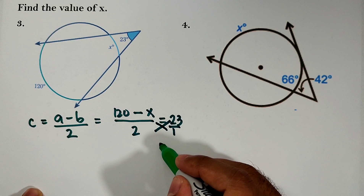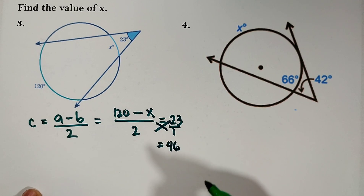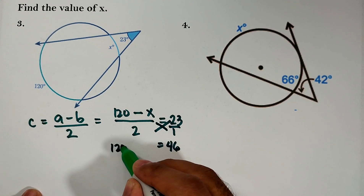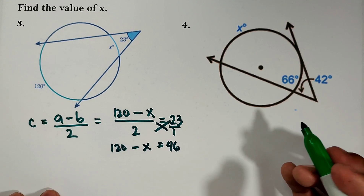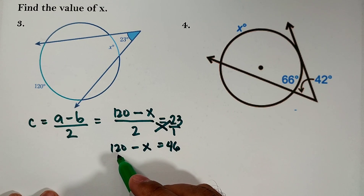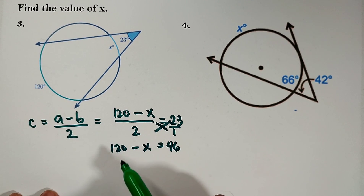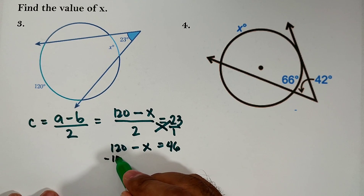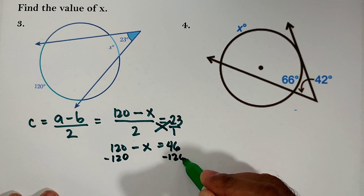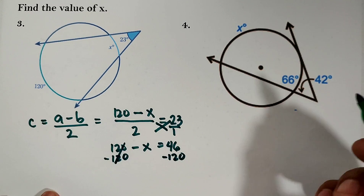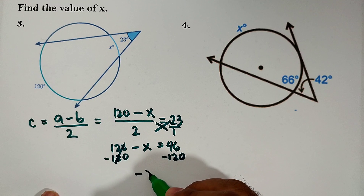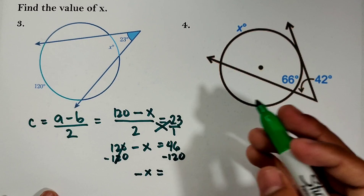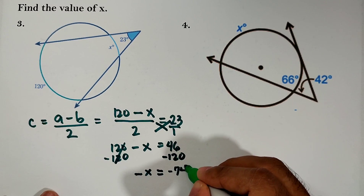23 times 2 equals 46, and 120 minus X times 1 gives 120 minus X. To eliminate 120 from the left side, subtract 120 from both sides. So negative X remains on the left, and 46 minus 120 equals negative 74.